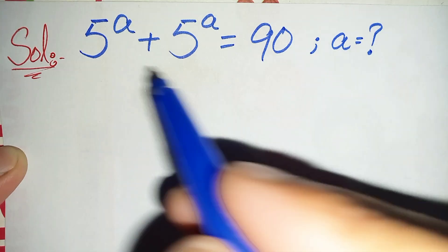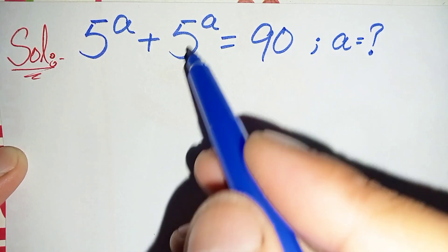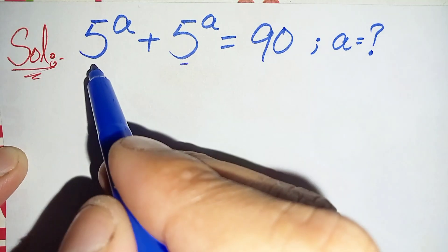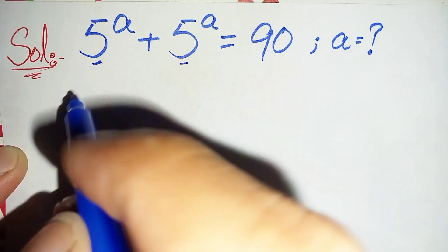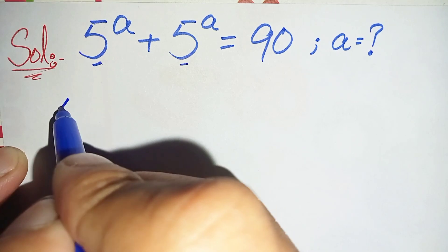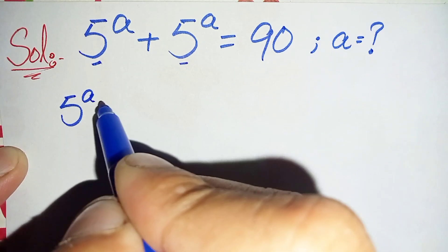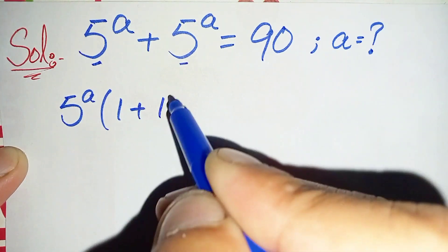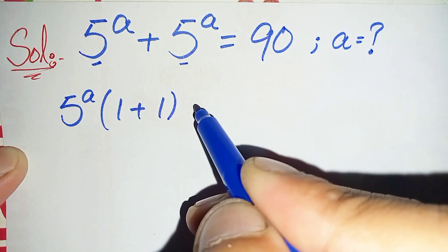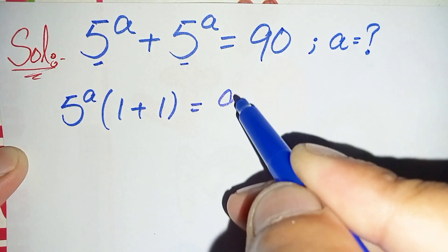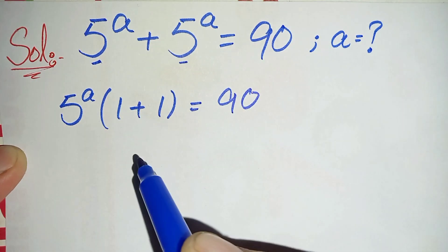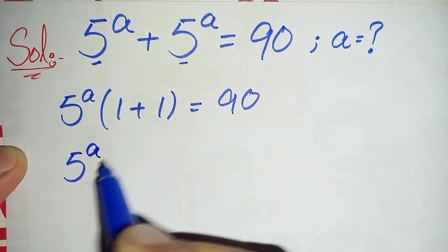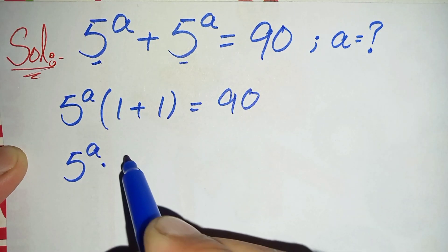Here the same number is added two times on the left hand side, so we will take 5 raised to power a common from the left hand side. This will become 5 raised to power a, and in both places only 1 will be left, giving us 5 raised to power a times 1 plus 1, which is 2.